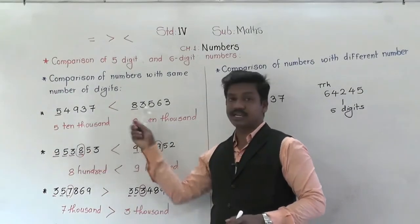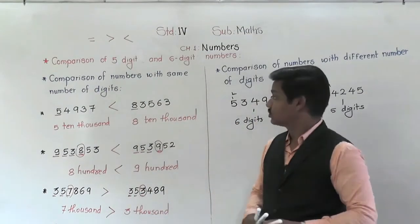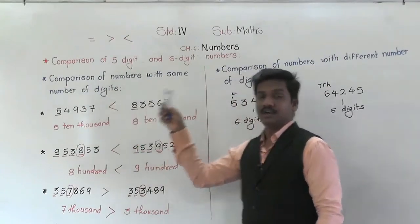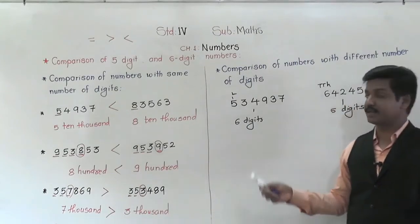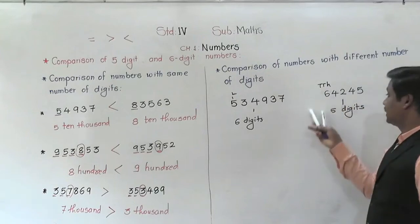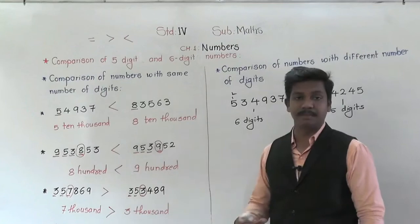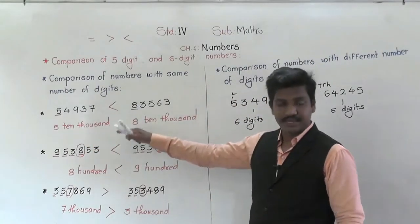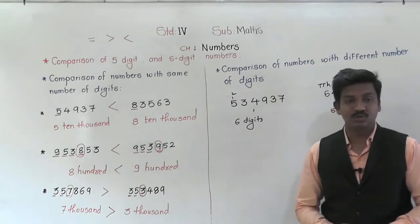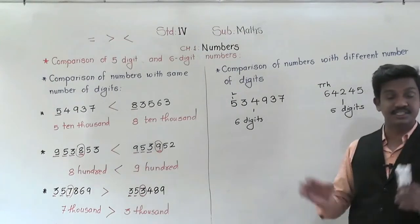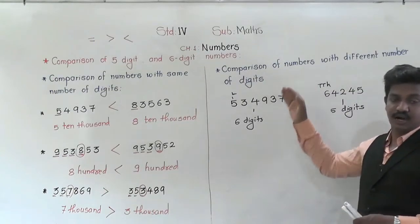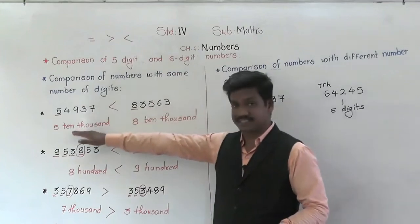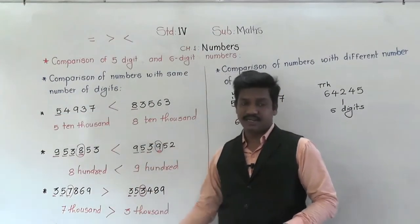And if both numbers on both sides are equal, we use the equal to symbol. So this way we have learned two types of comparison: comparison of numbers with different number of digits, and comparison of numbers with same number of digits. When digits are different, the number with more digits is always greater. When digits are the same, we compare their digits from the left side, place by place, until we find a difference.